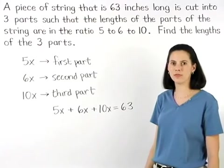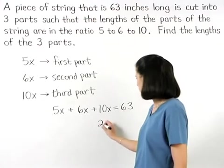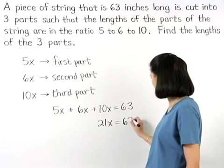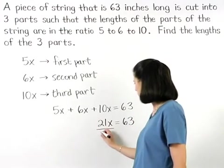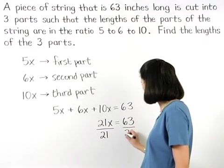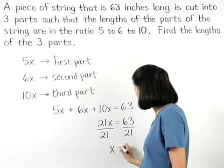Simplifying on the left side gives us 21x equals 63. And dividing both sides by 21, x equals 3.